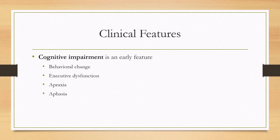For clinical features, cognitive impairment is an early feature. There can be behavioral changes such as apathy or depression, executive dysfunction, and apraxia — such as not knowing how to use a toothbrush, basically not knowing how to perform a previously learned action. There can also be aphasia.